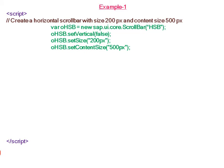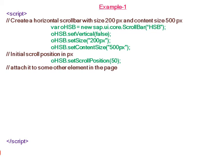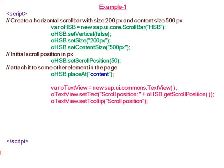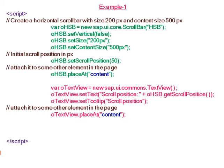The size of the scroll bar is set to 200 pixels, the content size to 500 pixels, and the initial scroll position is set to 50. We then attach this horizontal scroll bar to the div element. We also create a new text view with text showing the scroll position plus the exact position of the scroll bar, with tooltip 'scroll position', and attach the text view to the same div element.